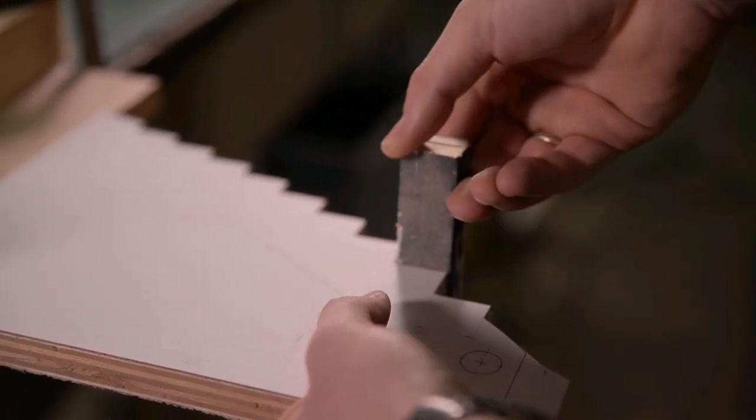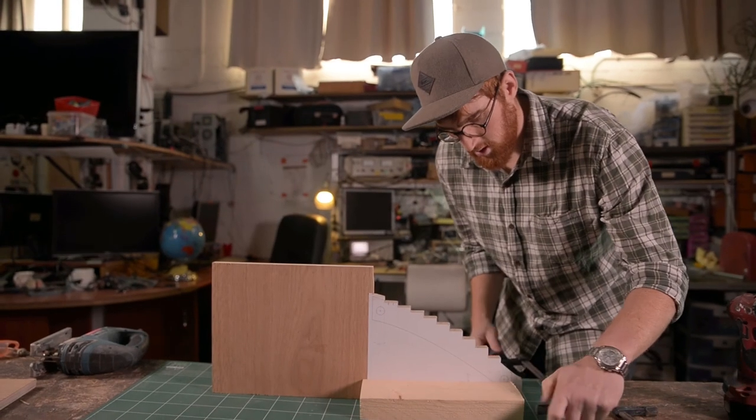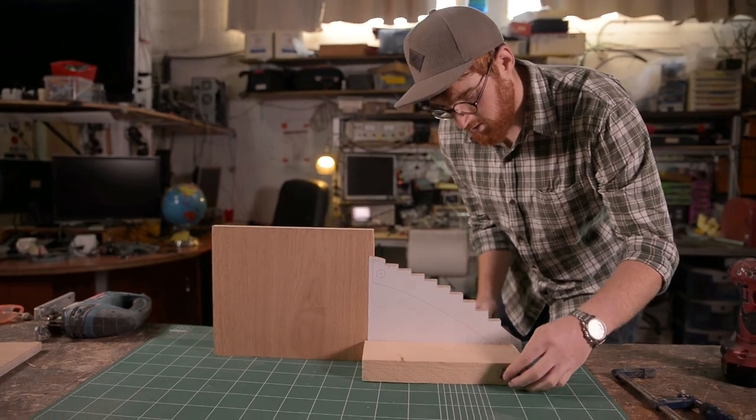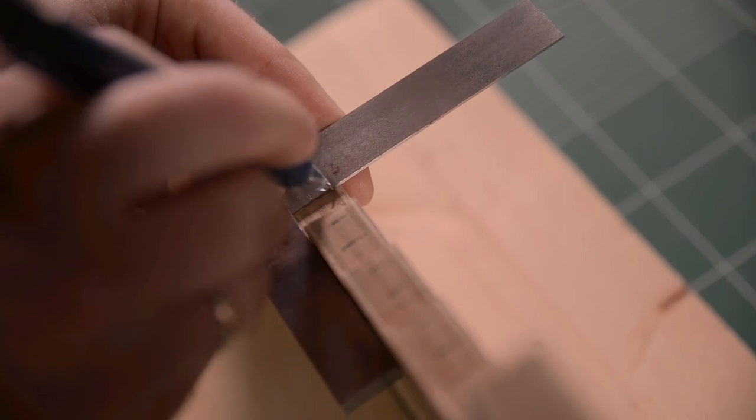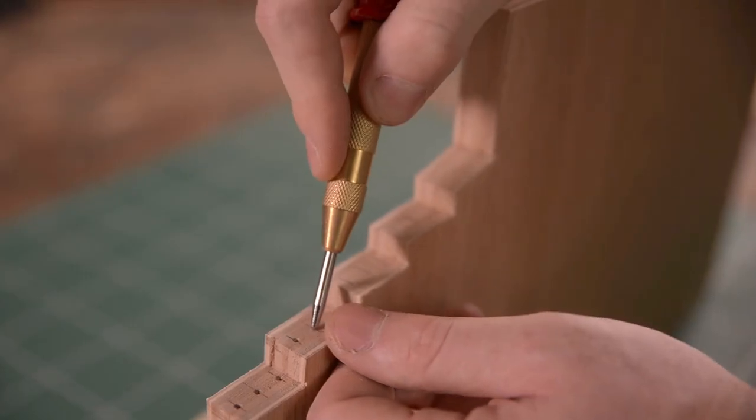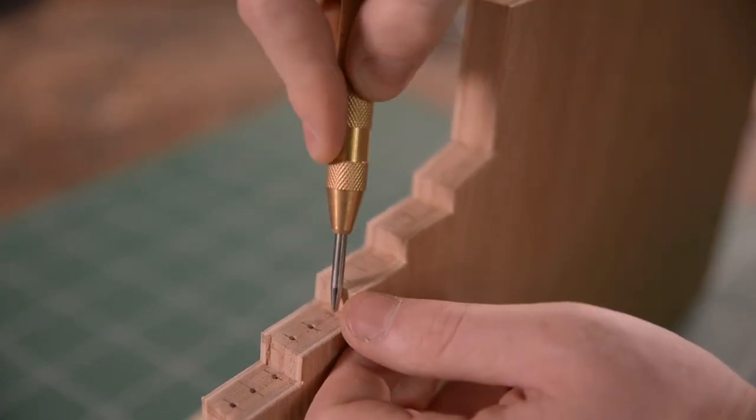Using a sanding block I sanded up to the line. I secured the whole part on its side and started transferring the relevant markings from the template to the plywood using a square. Then, using a center punch, I made a small divot that will help when drilling the holes.